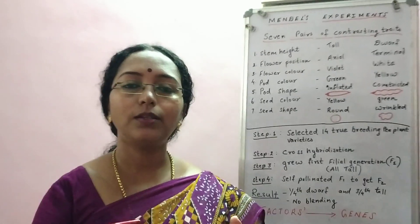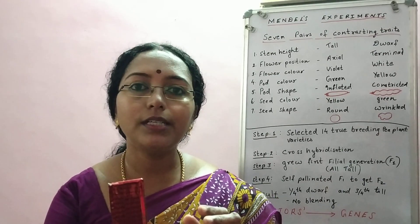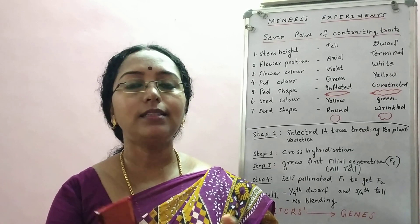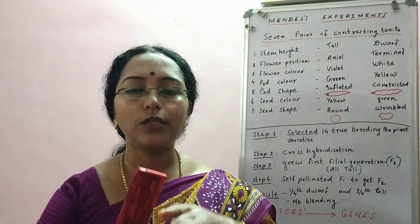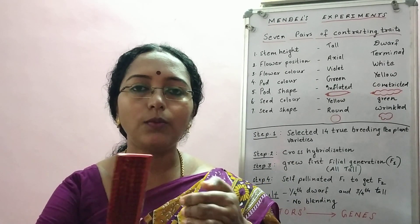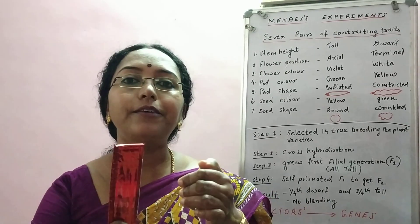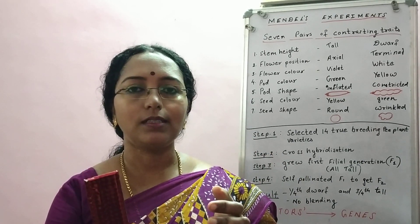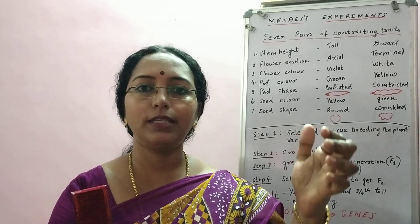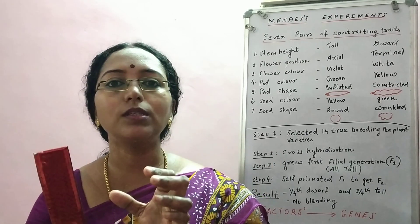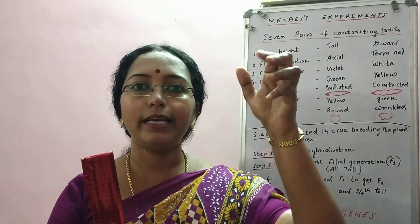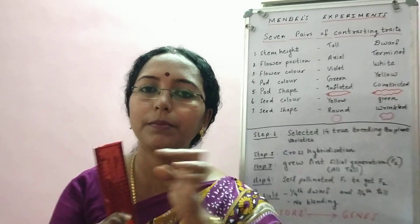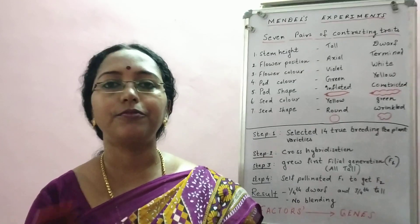After cross hybridization the F1 generation showed only one character expressed. Then the next step was self-pollination of F1. After self-pollination, the resulting F2 generation showed both characters expressed — in what ratio? One-fourth of one character and three-fourths of the other. The character expressed in F1 was more numerous in F2, and the character suppressed in F1 was less numerous but still appeared in F2.